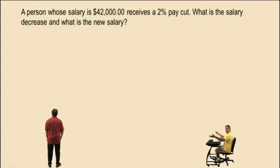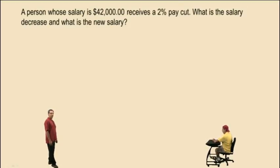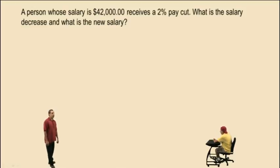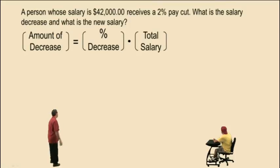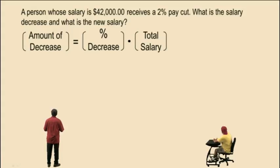Let's do another problem. This is a percent decrease problem. A person whose salary is $42,000 receives a 2% pay cut. What is the salary decrease, and what is the new salary? So we're asked to report two things: the amount of decrease and the new salary. Let's go back to our structured format — a portion equals a percent times the total. So the amount of decrease, which is the portion, is equal to the percent decrease times the total salary. The amount of decrease is what we're trying to find, so we represent that quantity by x.